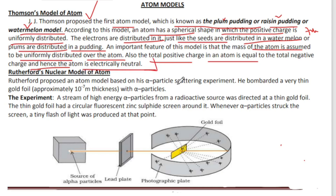To summarize, J.J. Thomson's model — also called the plum pudding model, raisin pudding model, or watermelon model — was the first proposed atom model. The electrons are distributed like seeds, the mass is uniformly distributed over the atom, and the positive charge equals the negative charge, making the atom electrically neutral.